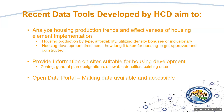Under this data strategy, HCD has been developing a variety of housing data tools — some to analyze housing production trends and effectiveness of housing element implementation, collected through the APR (annual progress report) process. We've also developed tools that provide information on sites suitable for housing development, collected through the progress report and housing element sites inventories. Additionally, we have posted many of our data sets on the California Open Data Portal to make data more available and accessible.